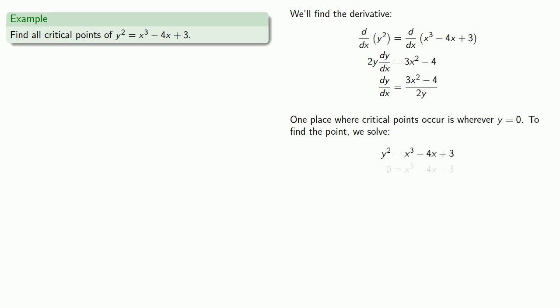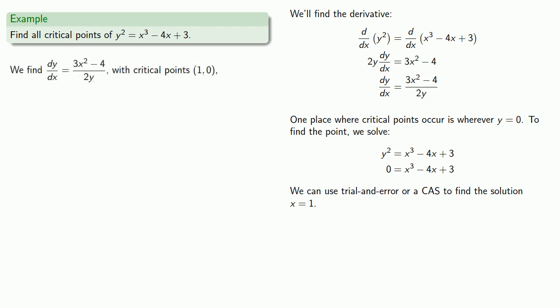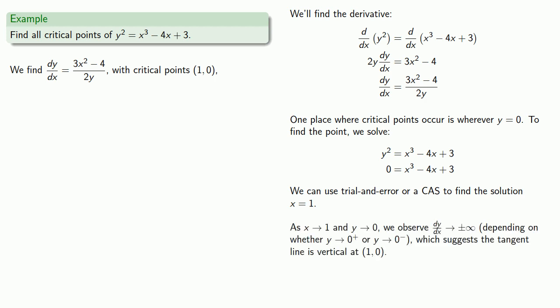To find this point, we need to solve our equation for x. This is a cubic equation, and most of us were never taught how to solve cubic equations. But we can use trial and error or a computer algebra system to find a solution x equals 1. As x approaches 1 and y approaches 0, our derivative approaches plus or minus infinity, depending on whether y is approaching 0 from above or below. That suggests our tangent line is vertical at the point x equals 1, y equals 0.